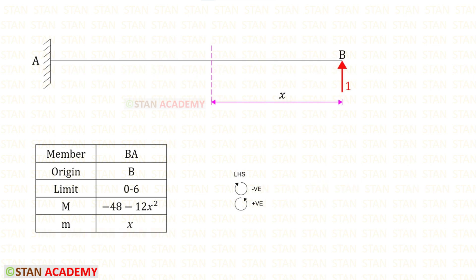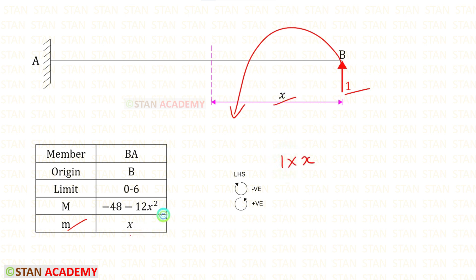Now we find the small moment m. To do this, we remove all loads from the beam and apply a unit load in the direction of RB1. The unit load acts in the anti-clockwise direction, so it is positive and the distance is x. Therefore 1 times x equals x, so m equals x.